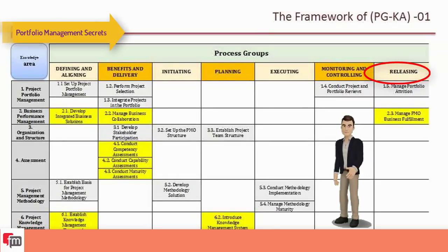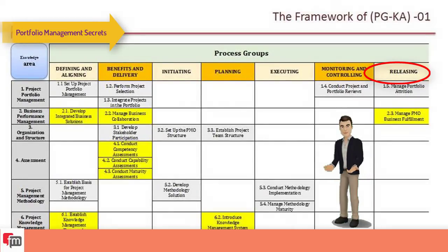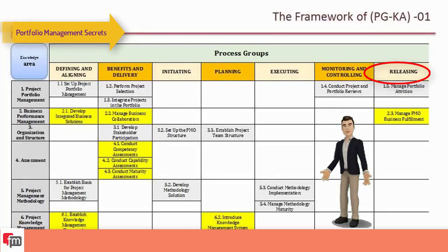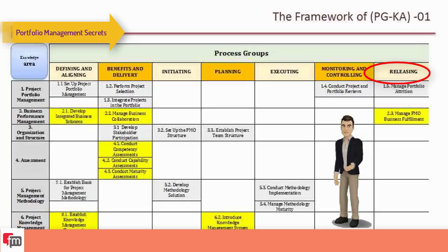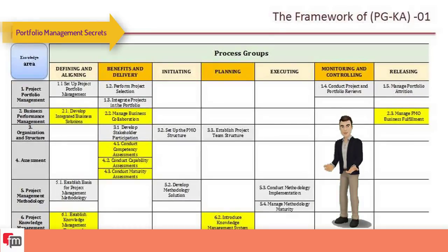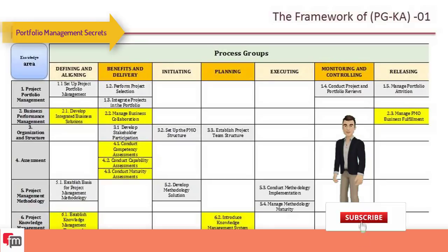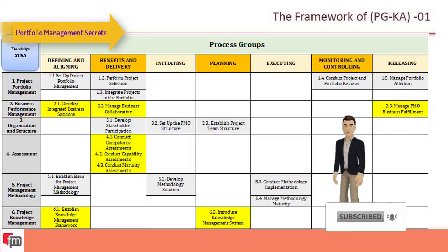The seventh process group is releasing. The releasing process group consists of processes performed at a point within a project when a potentially releasable solution, segment of a solution, product, or deliverable is ready for feedback or review, or when released for transition of ownership from the development area.